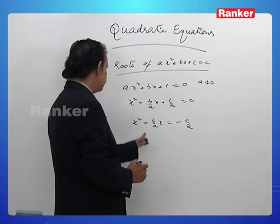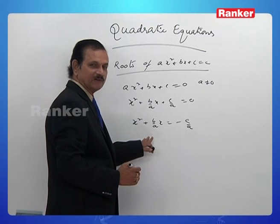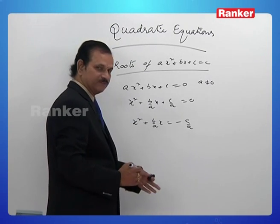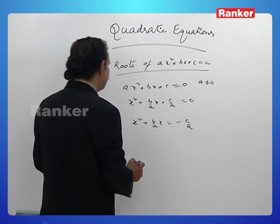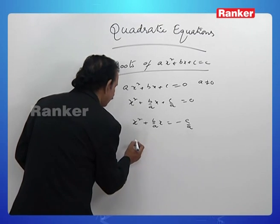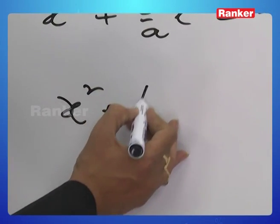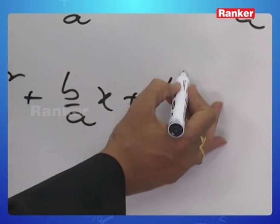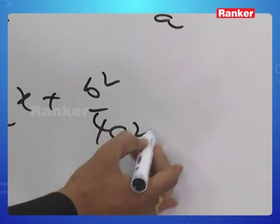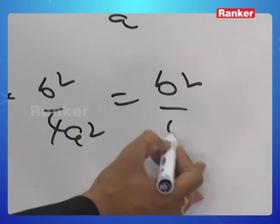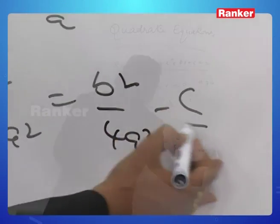Let us now try to view this as a perfect square. To make it a perfect square, let me add (b/2a)² on both sides. x² plus b/a times x plus b²/4a² equals b²/4a² minus c/a.